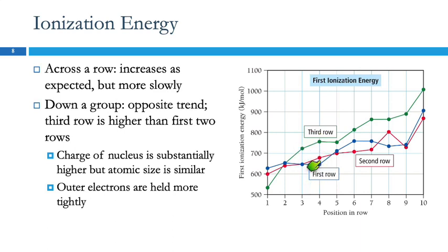Looking at the three rows: the first row, the second row, the third row — as we're going down, the ionization energy is increasing. That's not what we learned about the main group elements. The reason is that the charge of the nucleus is substantially higher, but the atom is actually smaller, so those outer electrons are going to be harder to remove.